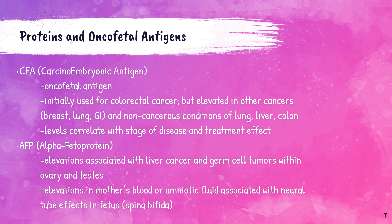Carcinoembryonic antigen, or CEA, is an oncofetal antigen. Oncofetal antigens are proteins which are typically present only during fetal development but are found in adults with certain kinds of cancer. Elevated CEA levels were initially used to detect colorectal cancer but can also be elevated in cancers of the breast, lung, and gastrointestinal tissues. CEA can also be elevated in non-cancerous conditions affecting the lung, liver, and colon. So you can see how these tumor markers are not very specific — unlike troponin, which is specific for the heart, tumor markers are not specific to one tissue source or one type of cancer.